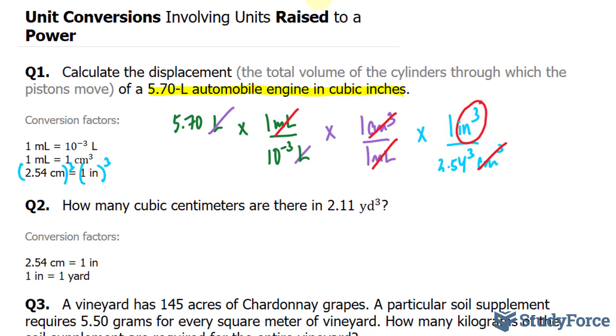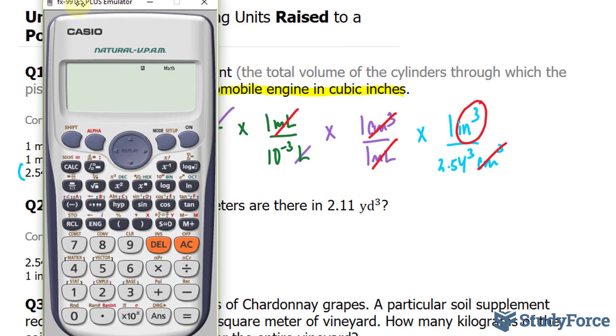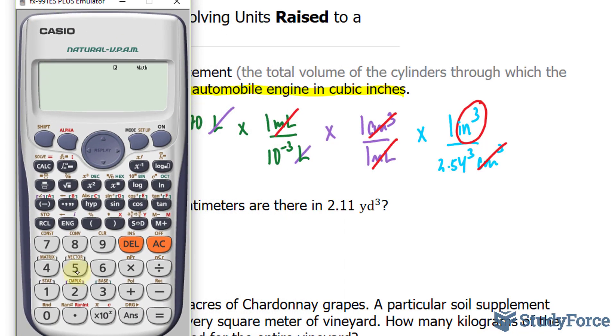Let's calculate this. Using our calculator, we have 5.70 times 1, there's no need for that, times 1, once again no need for that, times 1. So we end up with 5.70 for the numerators of this fraction, divided by 10 to the power of negative 3, times 1, there's no need to write that in, and 2.54 to the power of 3.